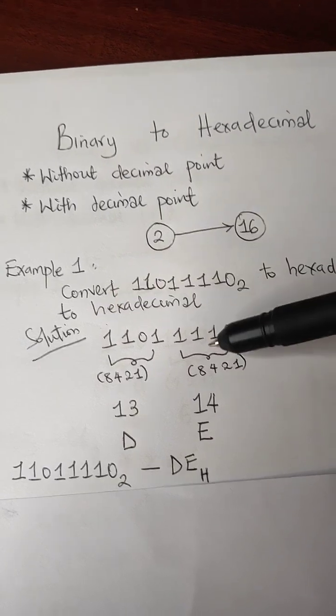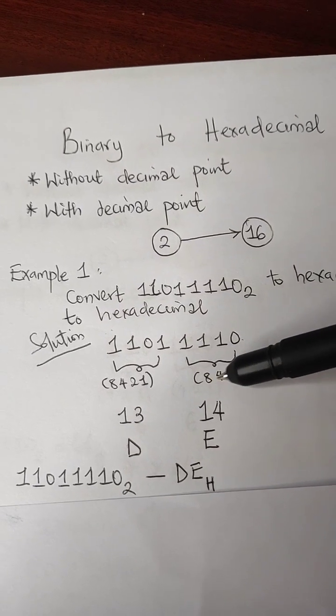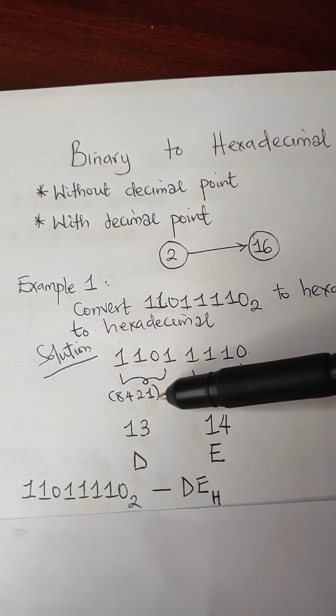And the next thing I need to do is, in each of these sets, I need to put 8421 on this side, 8421 on this side.